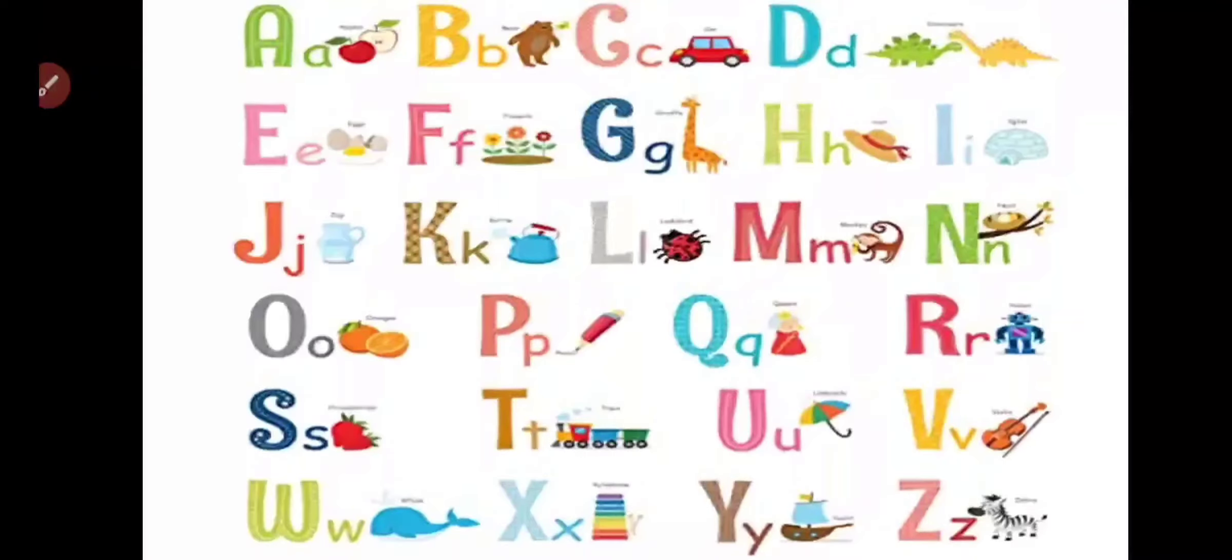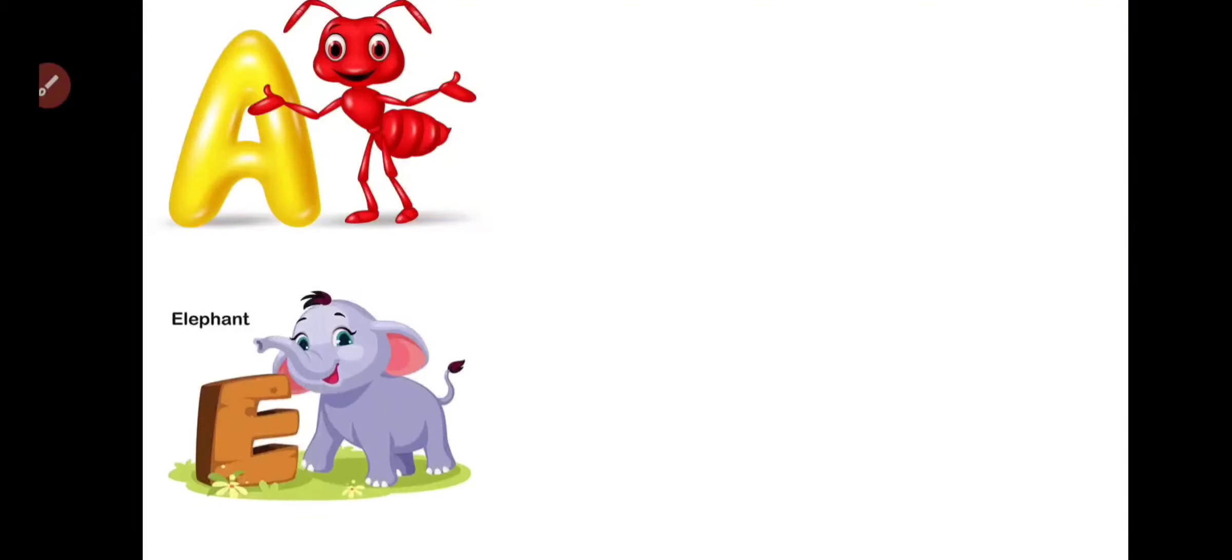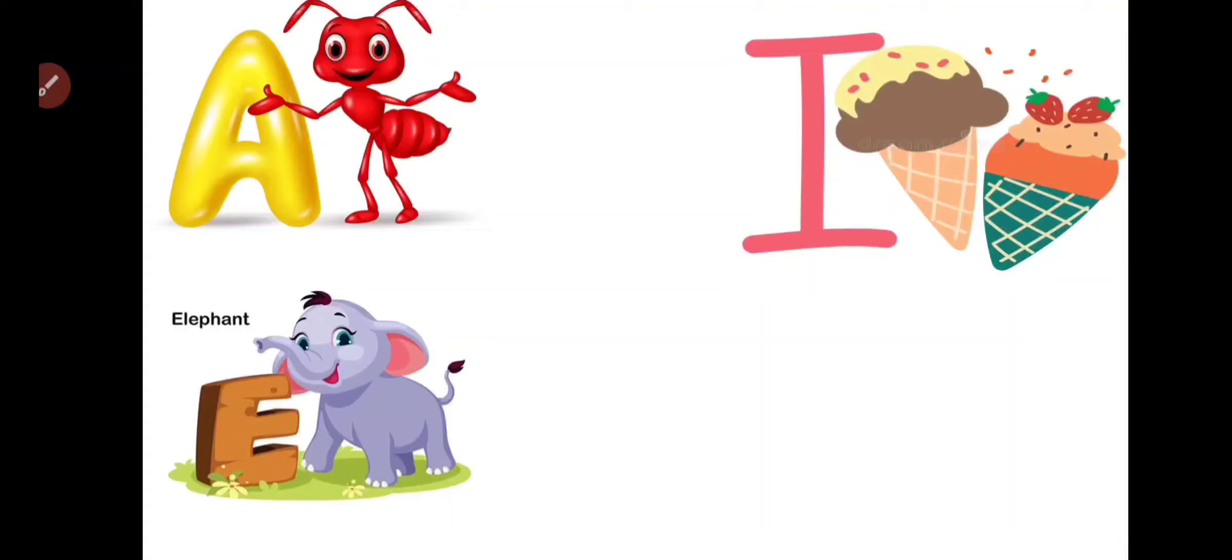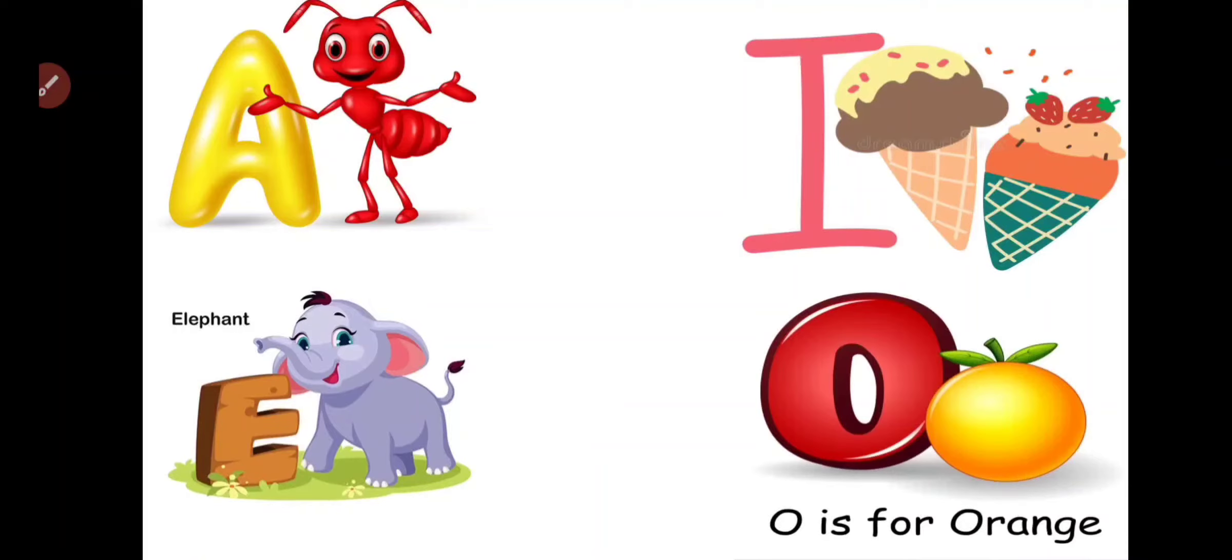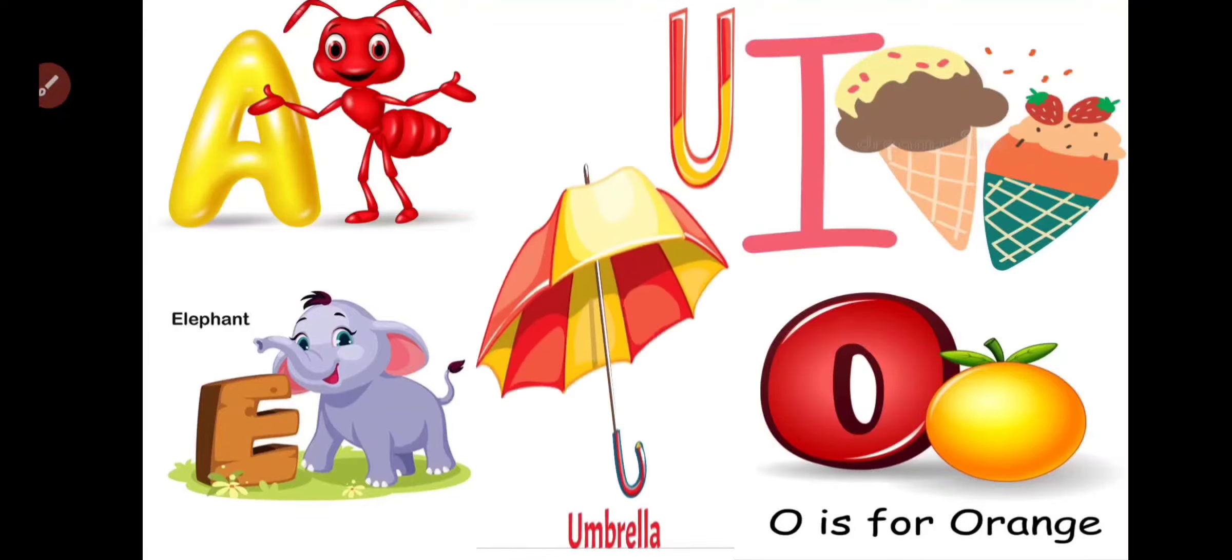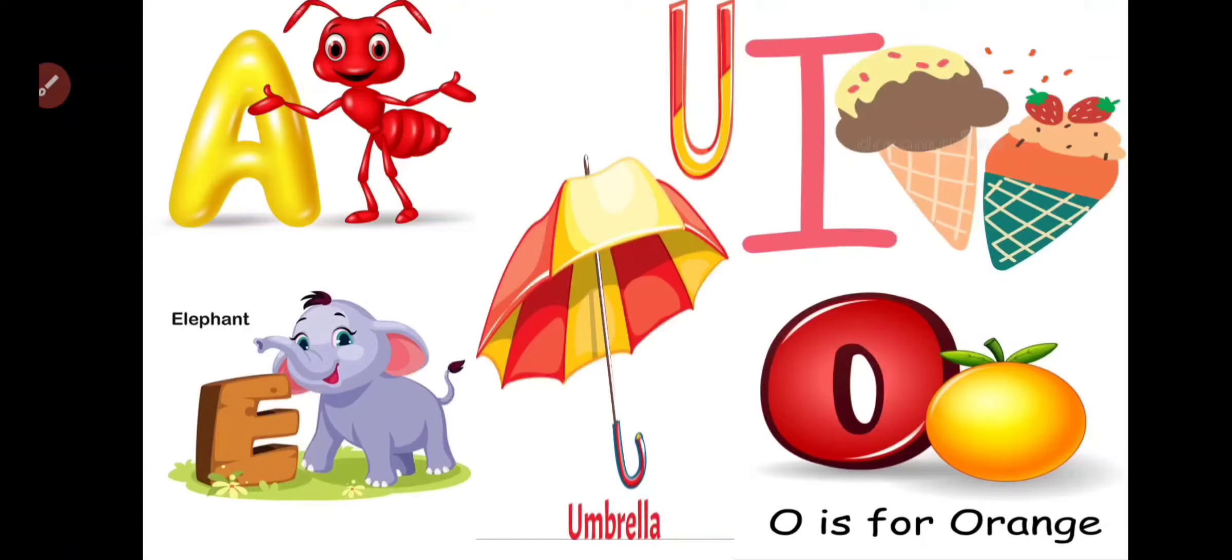I want to tell you a story. There was an ant and an elephant. They are best friends. So one day they decide to have an ice cream. But elephant want an orange flavor ice cream. Then they bought ice cream and they have it under the umbrella. Oh, these are letters.